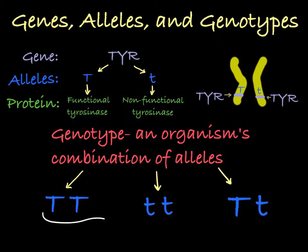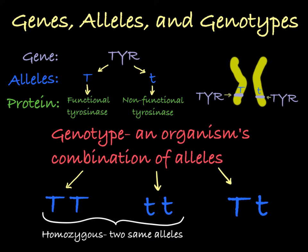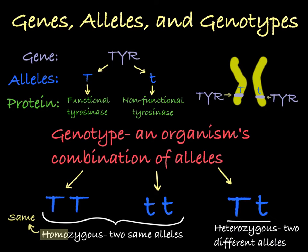When a person has a genotype that contains two of the same allele, they are said to be homozygous — homo meaning same. And if your genotype contains two different alleles, you are said to be heterozygous — hetero meaning different.